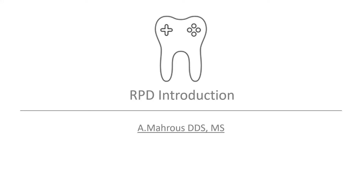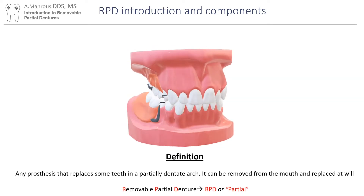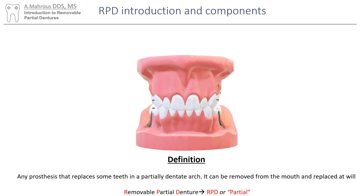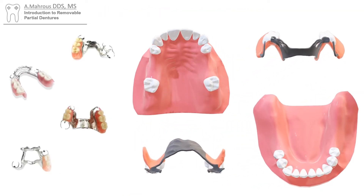Hello and welcome to another RPD video. Today we'll cover an introduction to RPDs. A removable partial denture, or RPD, is a prosthesis that replaces some of the patient's missing teeth and can be placed in and out of the patient's mouth at will.